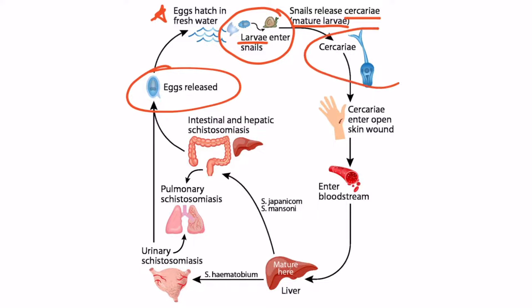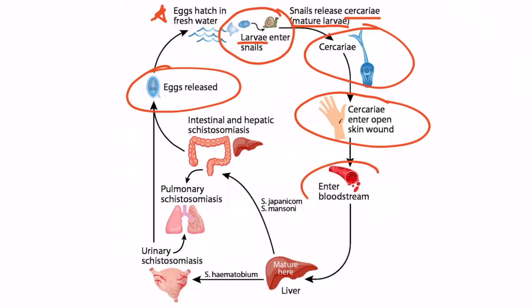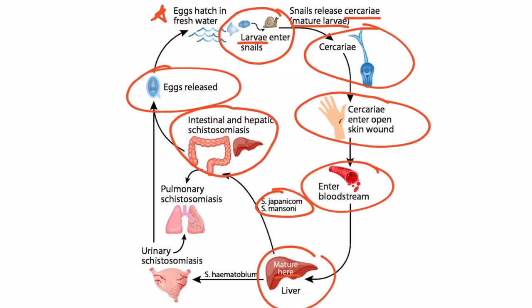All of these cercariae will then be floating around in the freshwater, just waiting for someone to have an open wound. The cercariae will then enter a human host through their skin wound and then enter the bloodstream. Once in the bloodstream, the parasite will go to the liver where it will mature. Up to this point, you weren't super worried about symptoms. It's what happens next that can lead to problems.